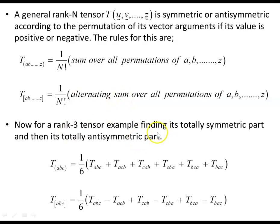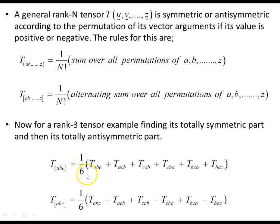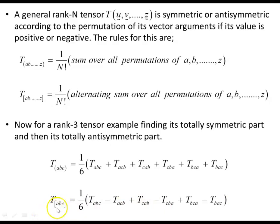For example, for a rank-3 tensor, the totally symmetric part permutes all index combinations — ABC, ACB, BAC, BCA, CAB, CBA — all with plus signs, giving 1/3! = 1/6 out front. The totally anti-symmetric part uses the same permutations but with alternating signs: plus, minus, plus, minus and so on, again with 1/3! = 1/6.